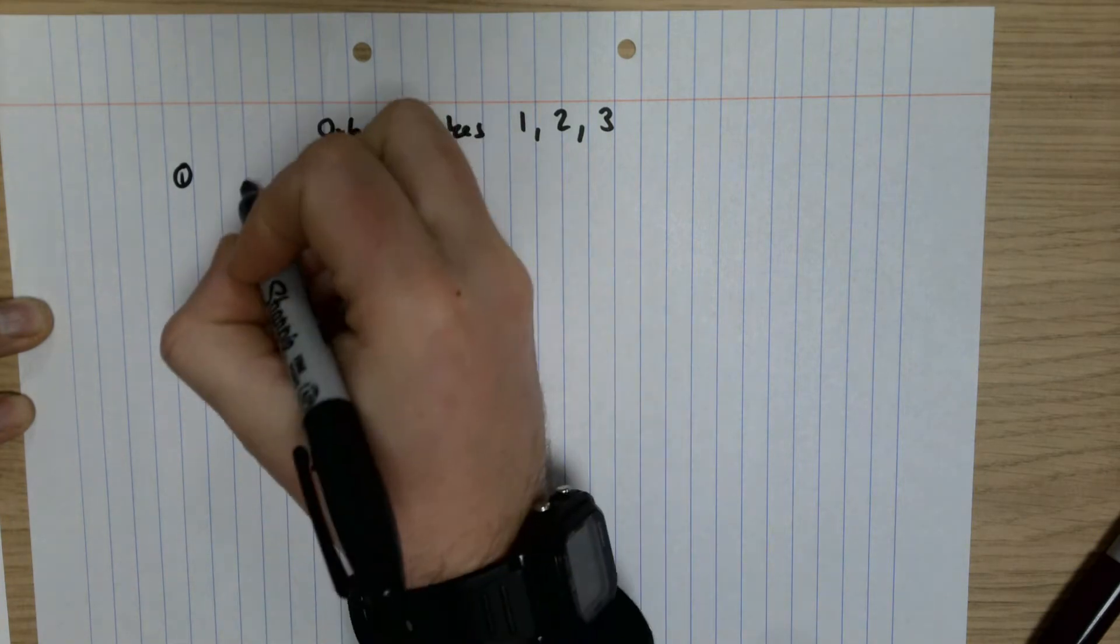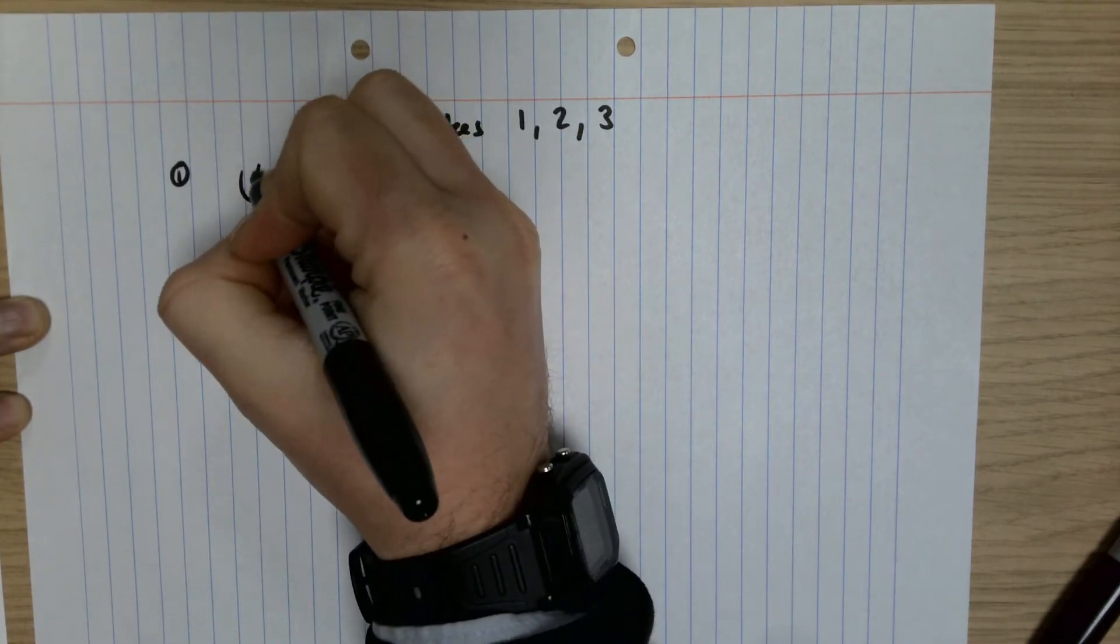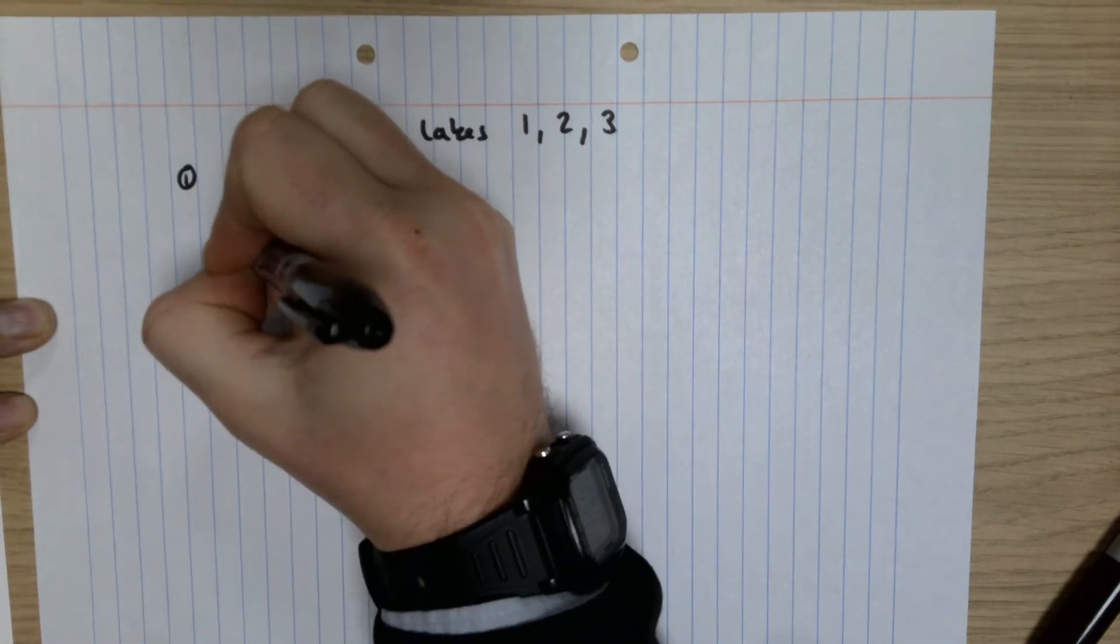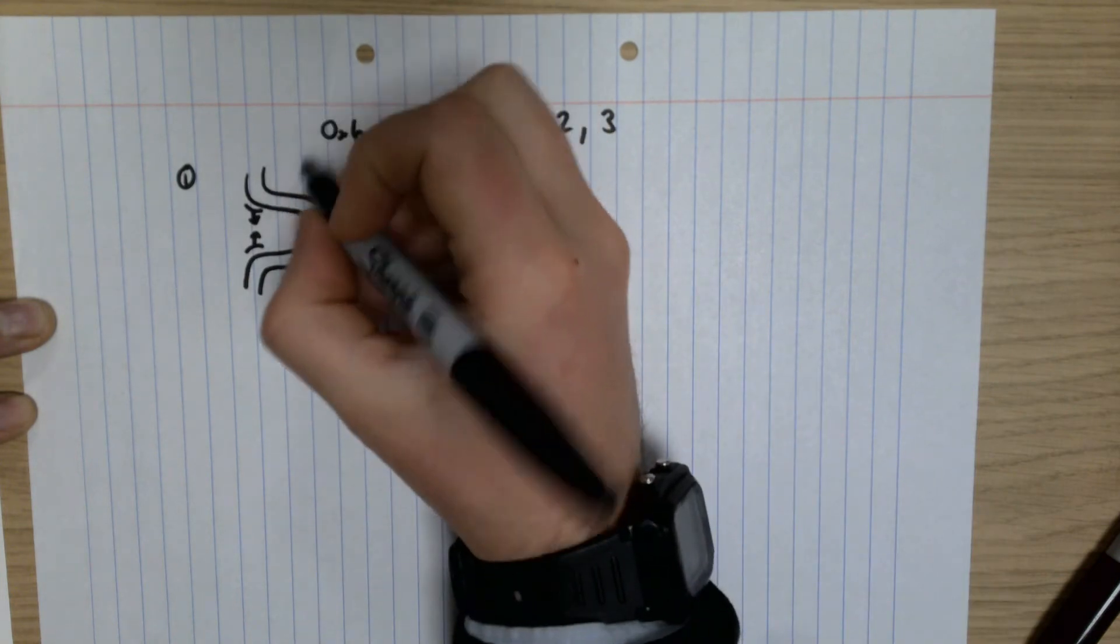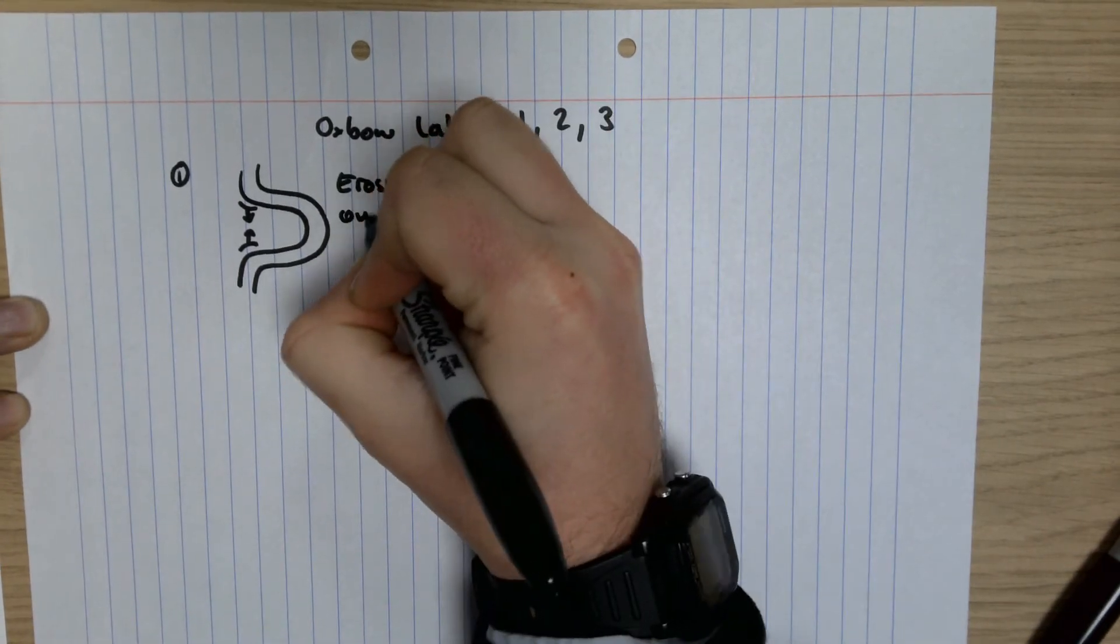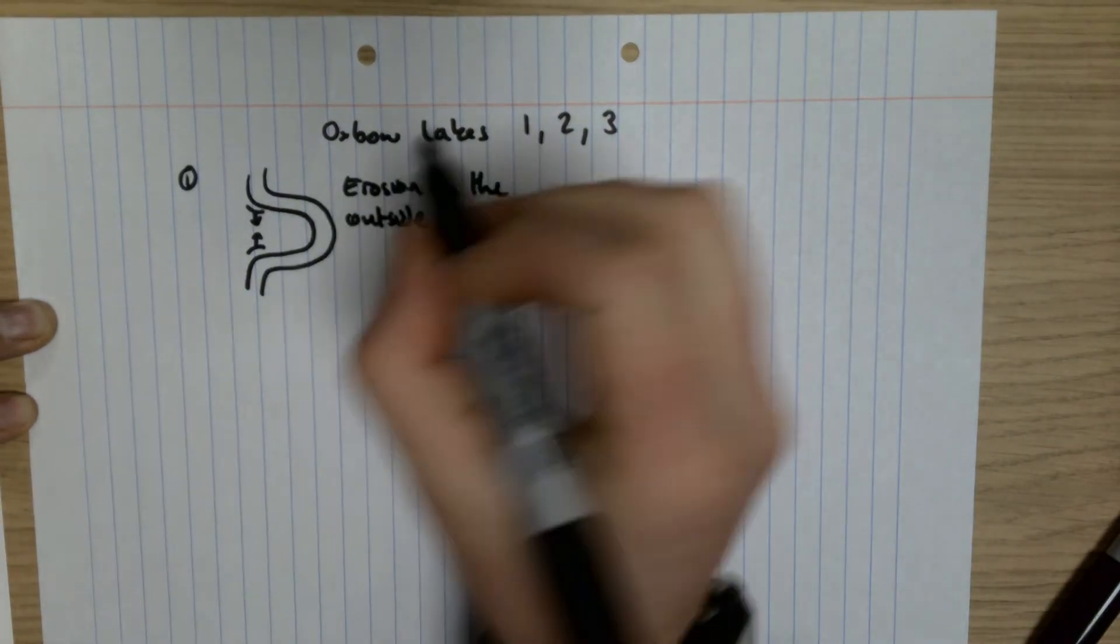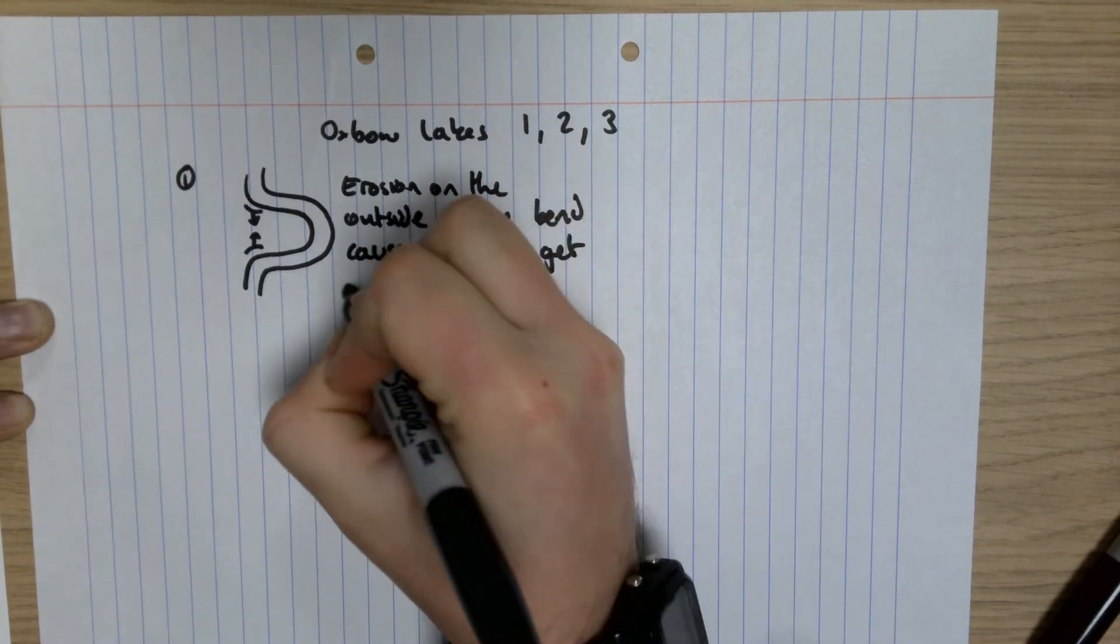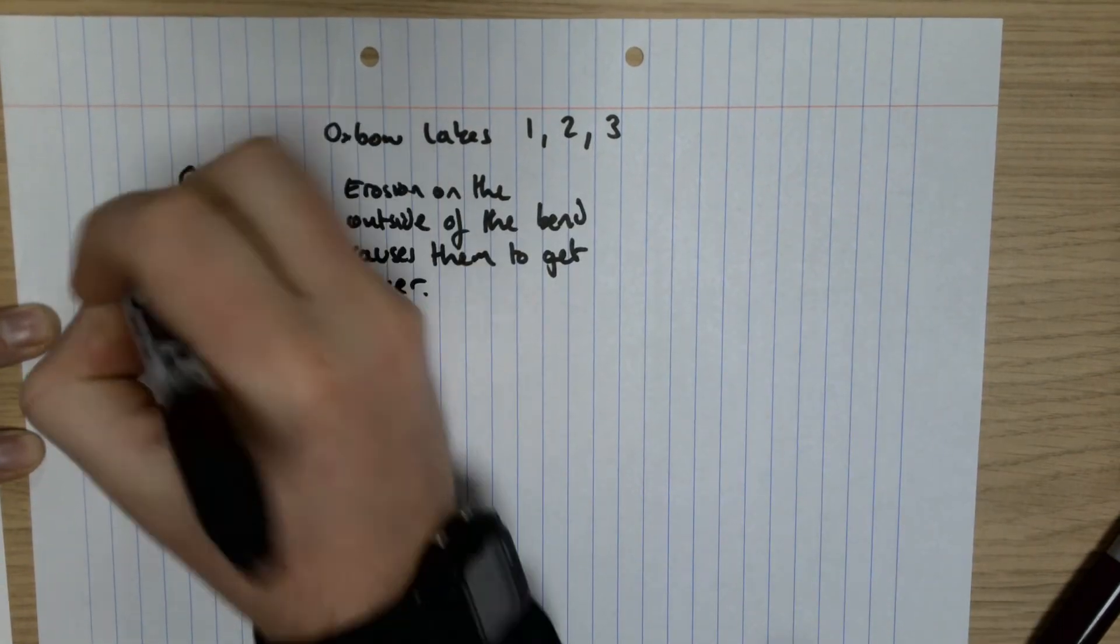Let's start off at number one. When we have a meander which looks like this, the first thing that happens is that we get erosion on the outside of the bend here and get erosion here. That means those two get closer. So number one: erosion on the outside of the bend causes them to get closer. This forms a little bit of land here which is called the neck.